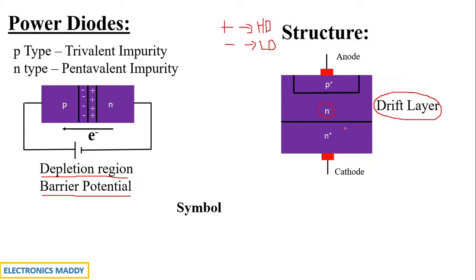The symbol of the power diode is the same as that of a normal diode, with no differences. The terminals are anode and cathode. We have now seen both the structure and the symbol — two very important points to note.